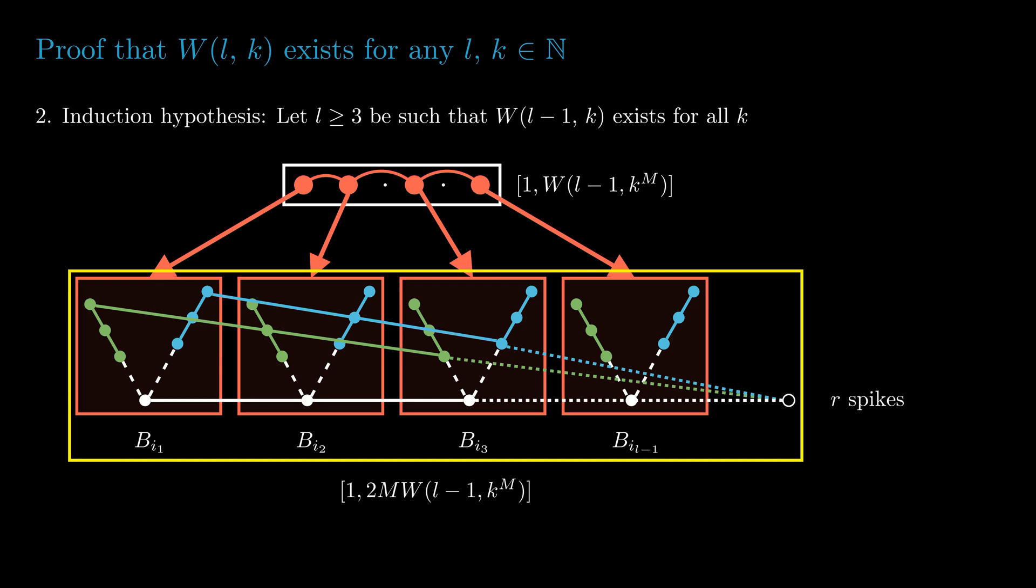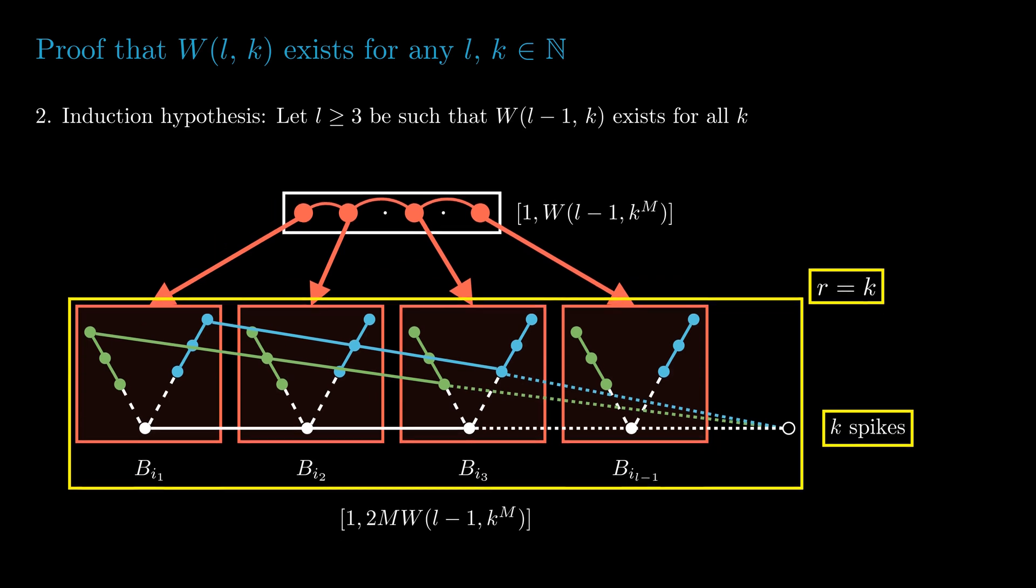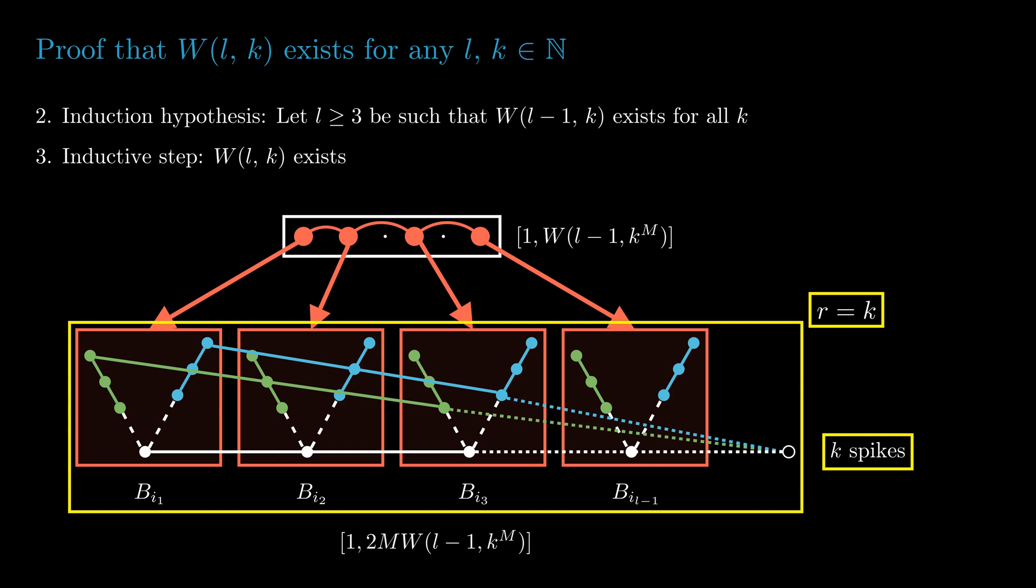We proved our claim for r ≤ k. What happens when r equals k? We get k spikes. Now since the new focus has to be one of the k colors, it will match the color of one of the spikes coming into it, which means we will get an l-term AP.